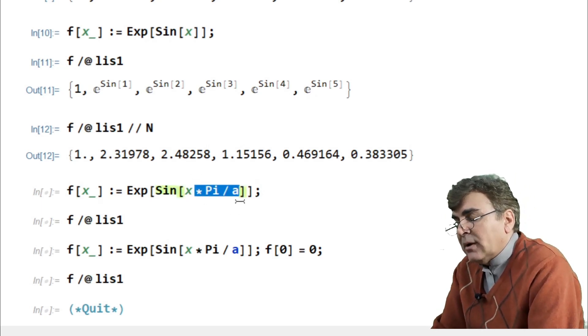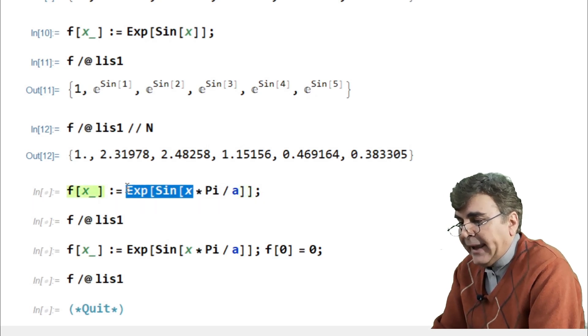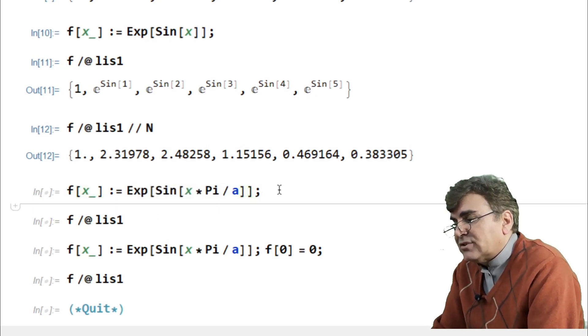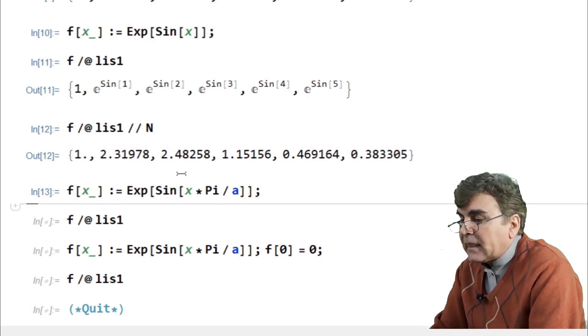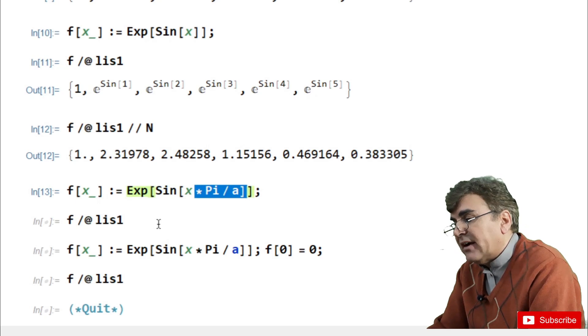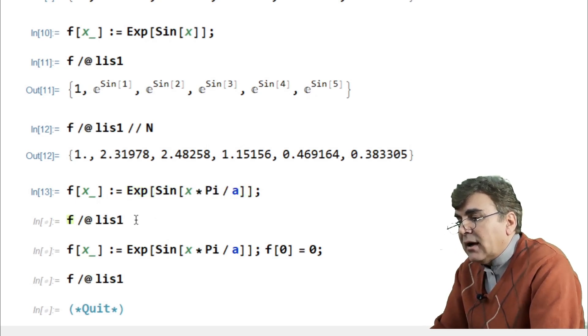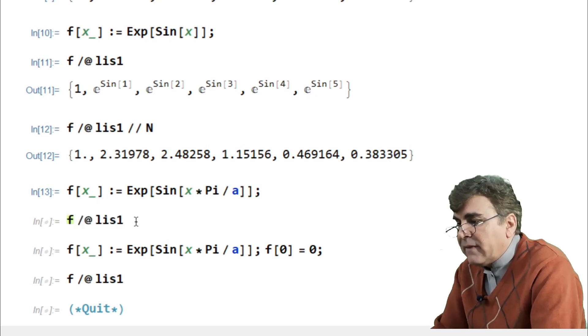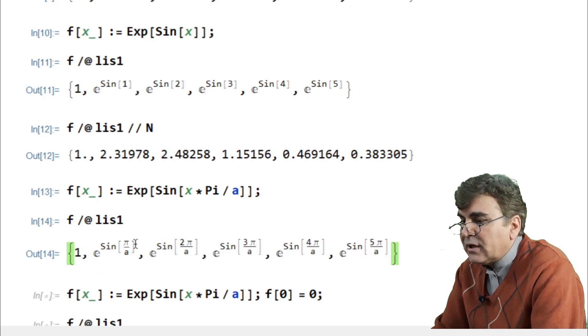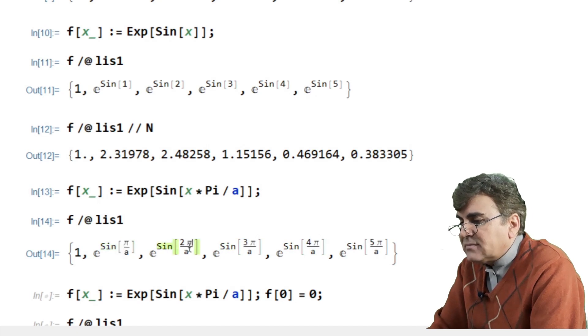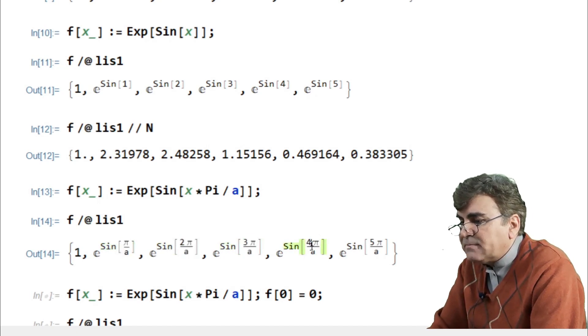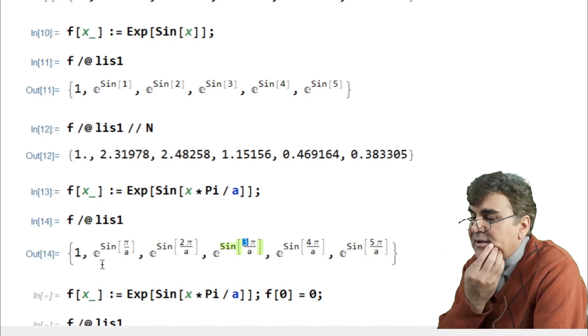I first want to multiply each value of the list with pi by a and then apply the functions exponent and sine. This thing I cannot do in the previous two cases. So this is in fact the extra freedom in user-defined functions. And if I define this function then run it, map it over list one. Now you see each element of the list is first multiplied with pi by a. You can see over here. Because this is one times pi by a, this is two times pi by a, this is three times pi by a and so on, where one, two, three are the elements of the list.